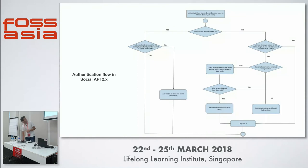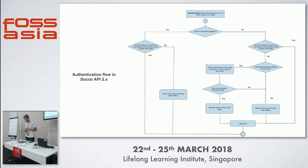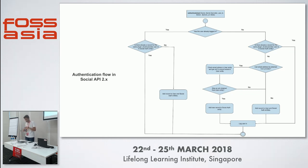The authentication flow in Social API works as follows: if a user is already logged in, we link a social provider to their existing account. If not logged in, we obtain the email address from the social network. If the social network provides an email, we check if that email already exists in the database and link the social network account to that user. If the email already exists, we associate the accounts. For social networks that don't provide an email address, we ask the user to fill in their email and other required details to complete sign-up or login.